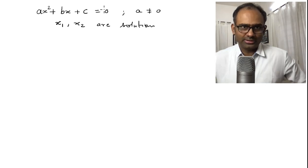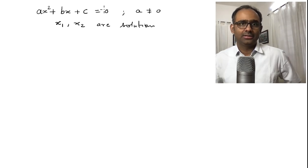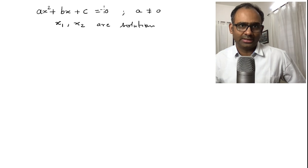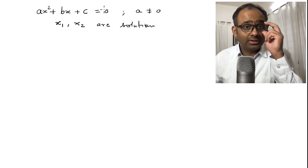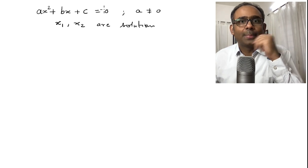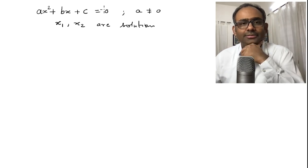In general two solutions maybe the solutions are repeated meaning both x1 and x2 are same and it is also possible that you do not have real solutions but you might have complex solutions.